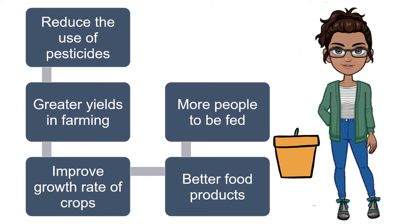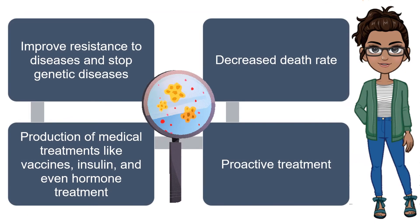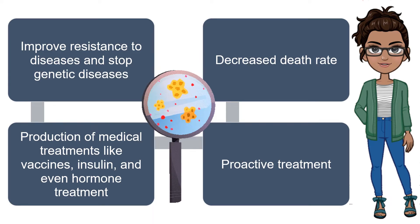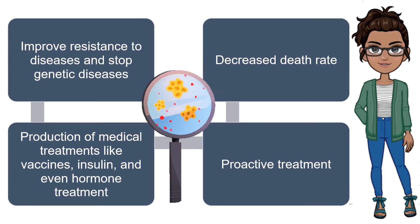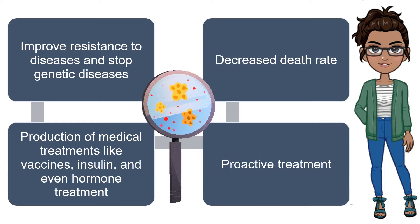Genetic engineering allows specific traits to be developed for plants and animals. It can improve resistance to diseases and even stop genetic diseases in humans. We already have genetic testing in place to test for certain cancers. Genetic engineering could use DNA manipulation to help treat or cure people who are born with genetic disorders. The different tools of genetic engineering could produce novel medical treatments like vaccines, insulin, and hormone treatment. Through GE, we can create more treatments that allow us to be proactive against pathogens with life-threatening characteristics, which will further decrease the death rate.